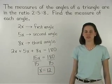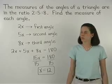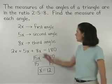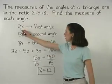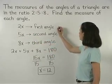Now, to find the measures of each of our angles, we simply plug 12 back in for x. So our first angle, 2x, measures 2 times 12, or 24 degrees.